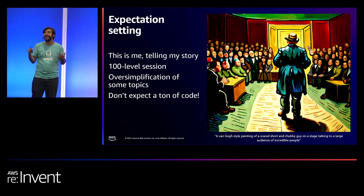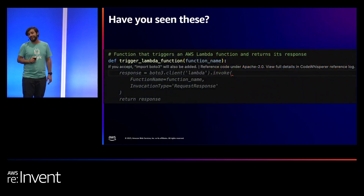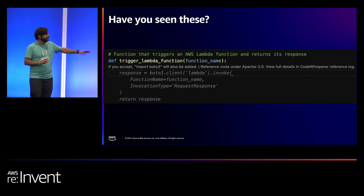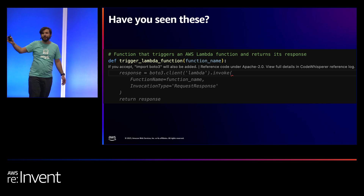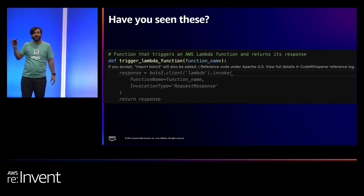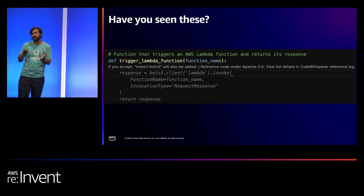It's about getting inspired. So don't expect code — except for this slide. This slide has code; that's the only one, I promise. Have you seen this before? Because you're using Amazon CodeWhisperer, right? Amazon CodeWhisperer is Gen AI helping us become better coders — not builders, coders. And that's part of the story.